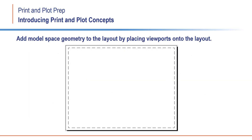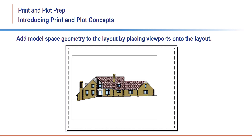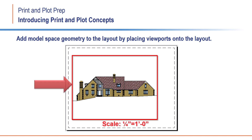You then add the model space geometry to the layout by placing viewports onto the layout. Each viewport is essentially a window that displays the model space geometry at a scale that will fit onto the layout, the sheet of paper.